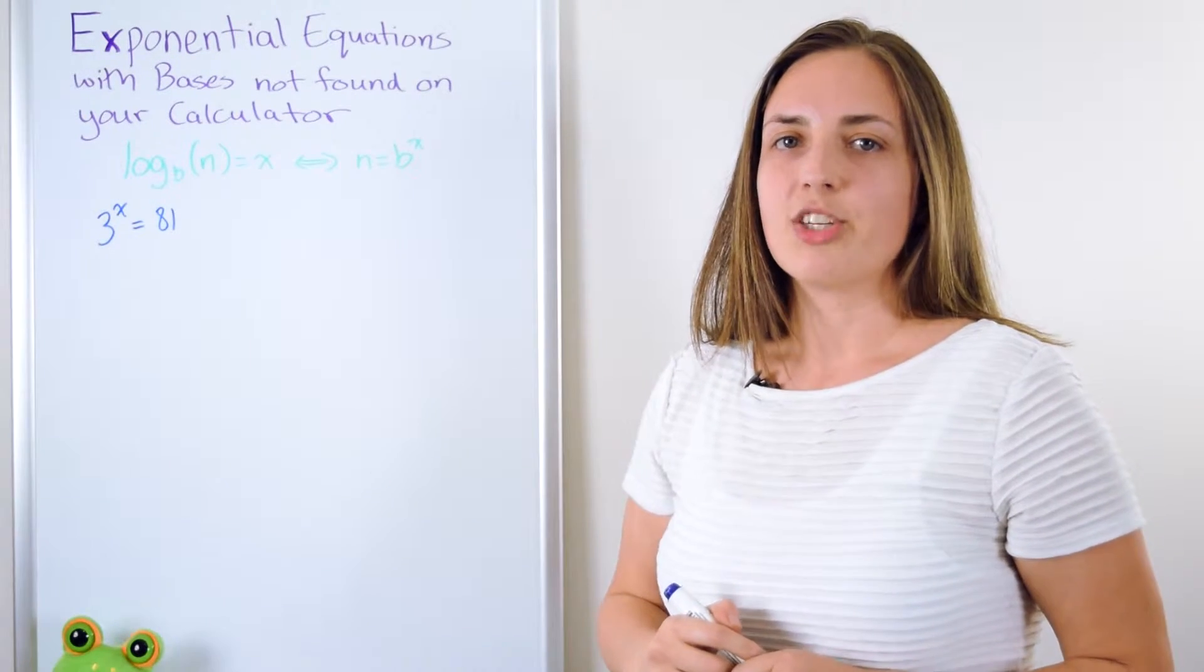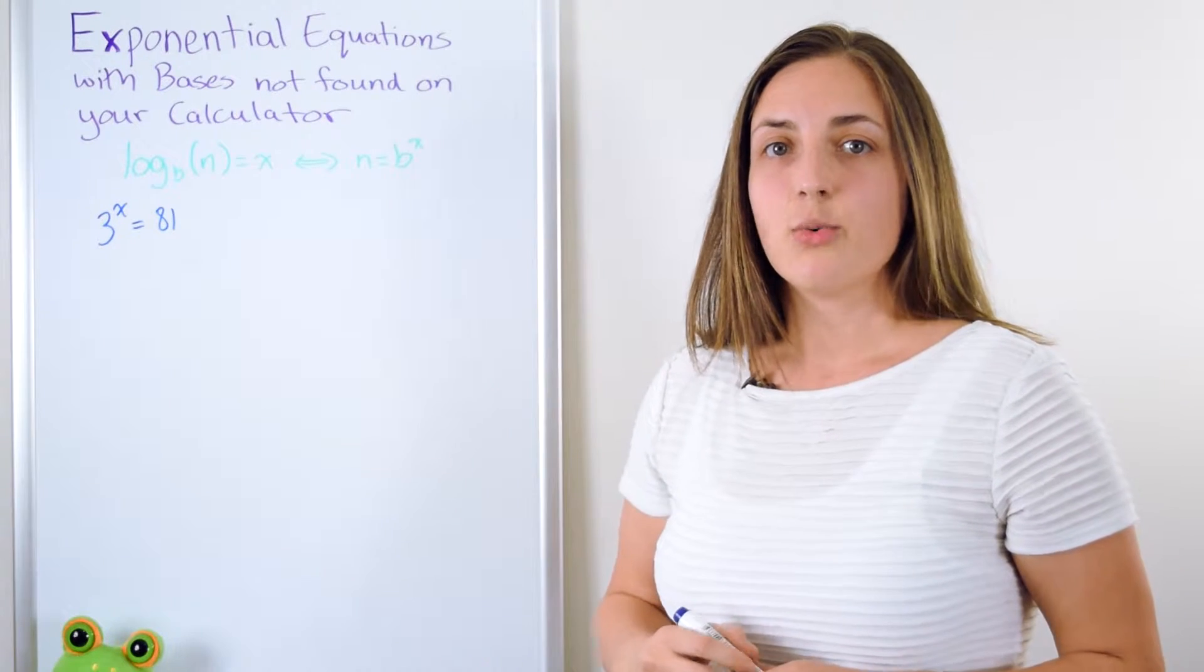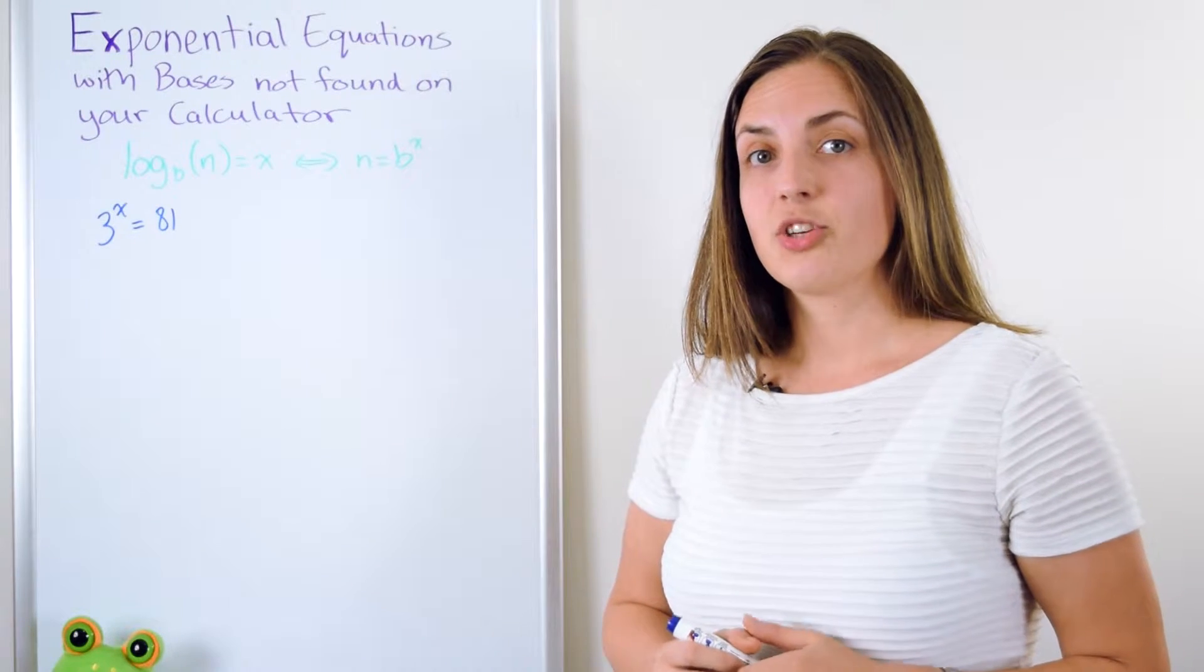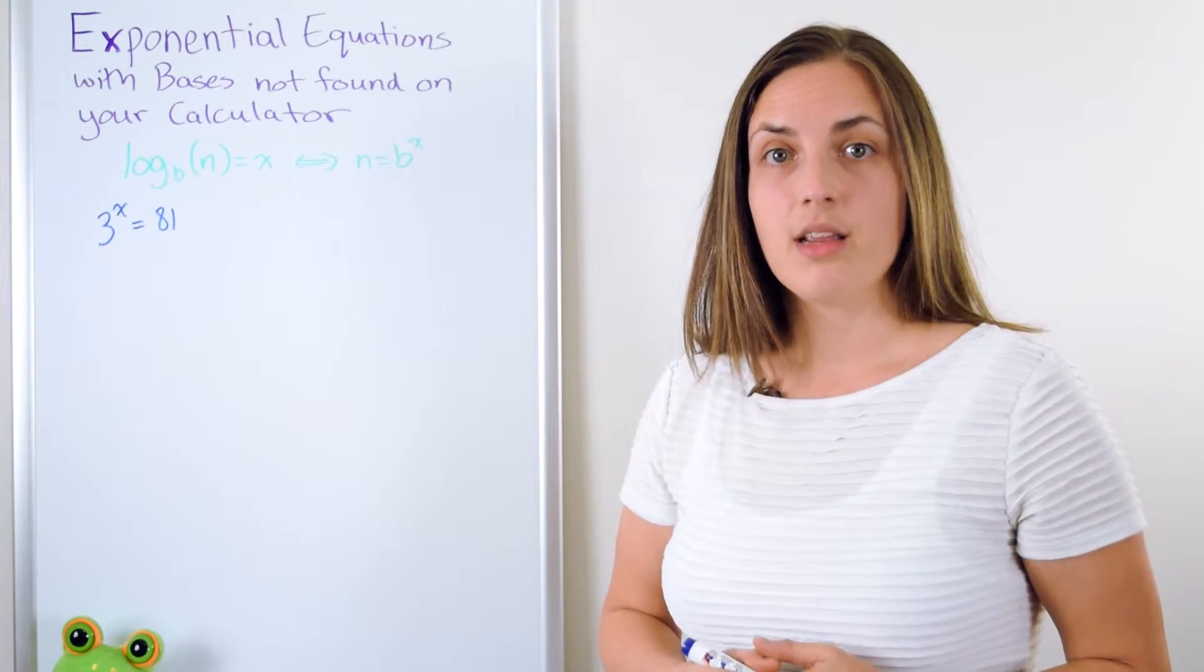Here's my exponential equation. 3 to the power of x equals 81 and I want to solve for x. So by definition, I know that x should be the logarithm base 3 of 81.